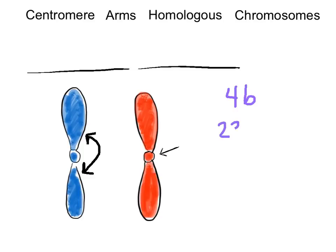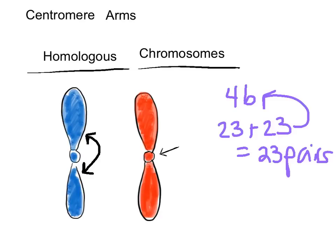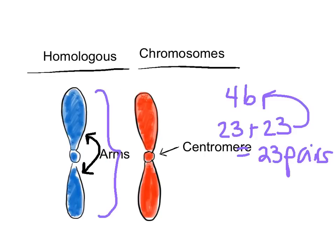We actually get 23 from mom and 23 from dad, which gives us a total of that 46, or 23 pairs. The chromosomes that make up our pair are actually called homologous chromosomes. They look a lot alike, they have the same length, they have the same centromere position, so this right here is the centromere, and they have similar looking arms, and they carry the same genes that control the same inherited traits.